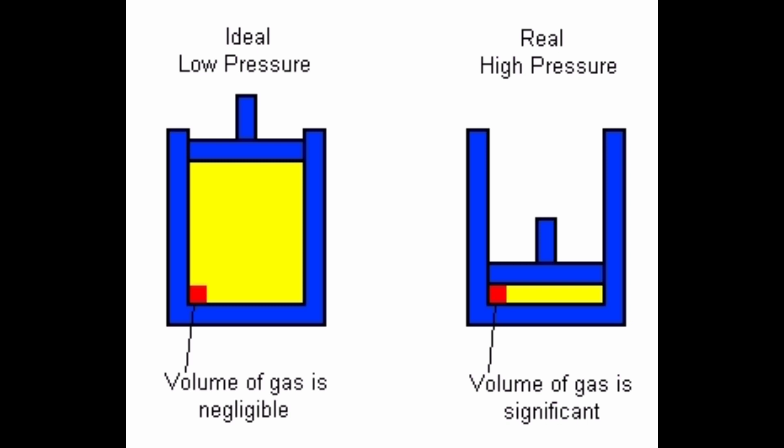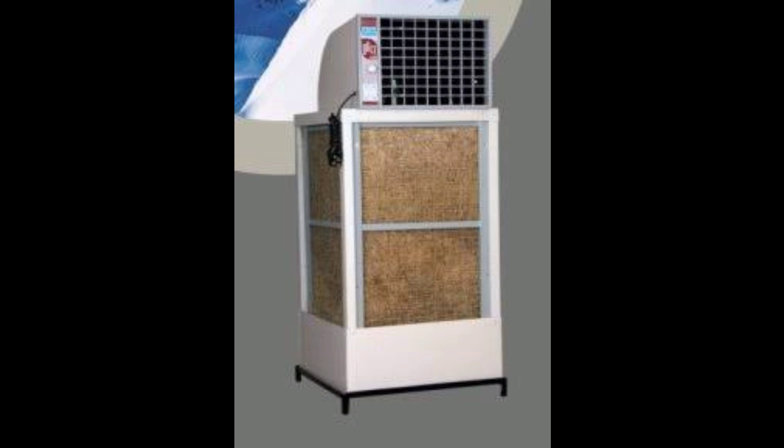Next question: why does a desert cooler cool better on a hot dry day? You can see that the desert cooler consists of some water and the water will get evaporated. Because of evaporation, we know that the water gets cooled. On a hot dry day, the temperature is high, therefore humidity is low. The rate of evaporation increases with increase in temperature and because of decrease in humidity also.